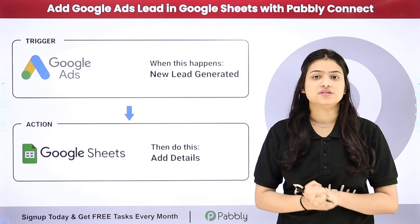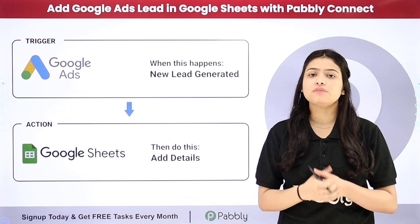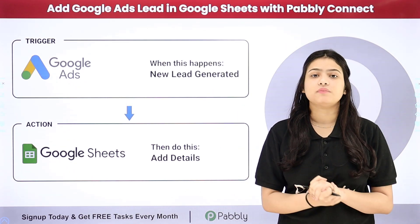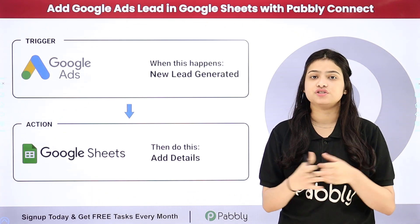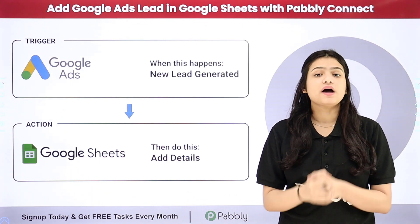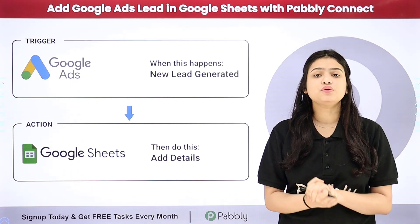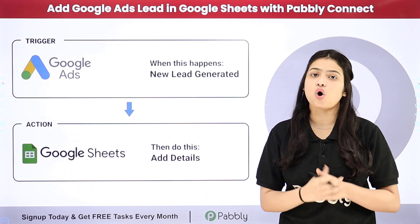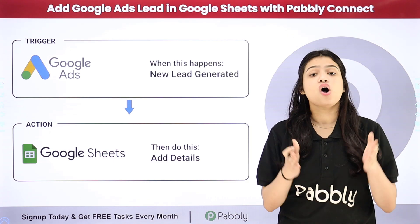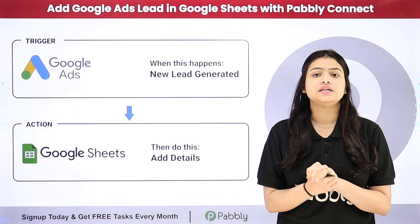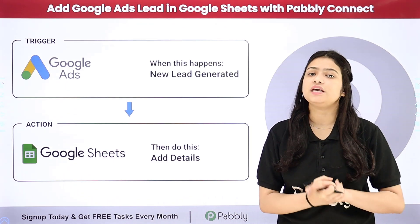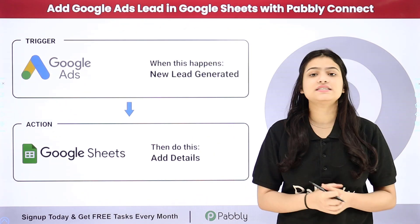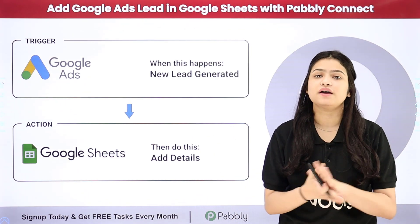I am managing a marketing agency and to promote my business I am using Google Ads. I am running an ad campaign and I have also created a lead gen form. My objective is that every time I receive a new lead through the form submission, automatically the details of that lead such as their name, email address, phone number, city, and company name should be recorded systematically in my Google Sheets.